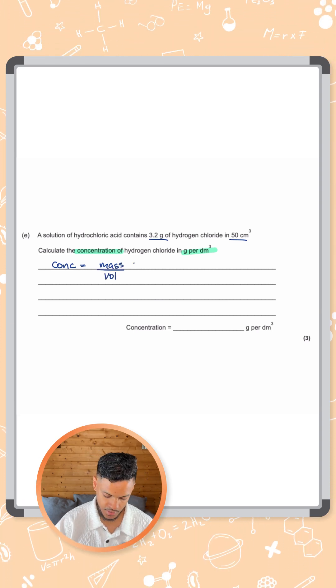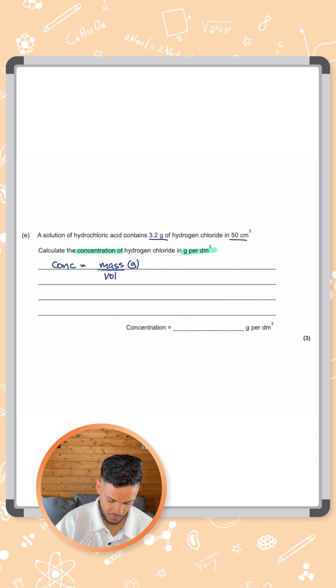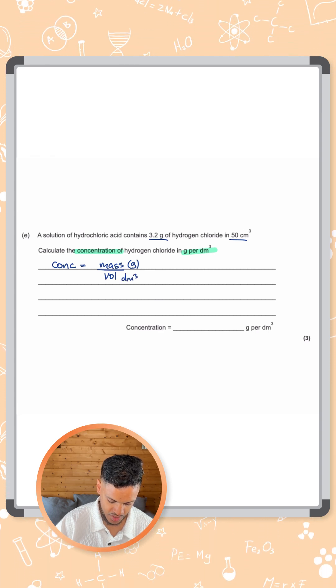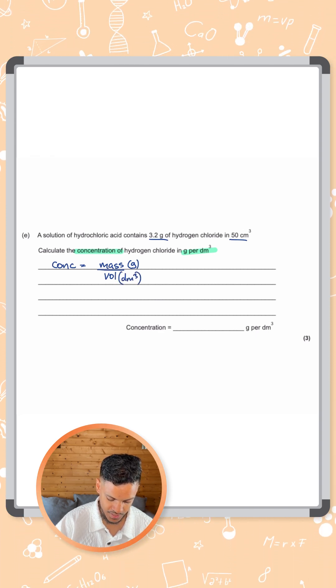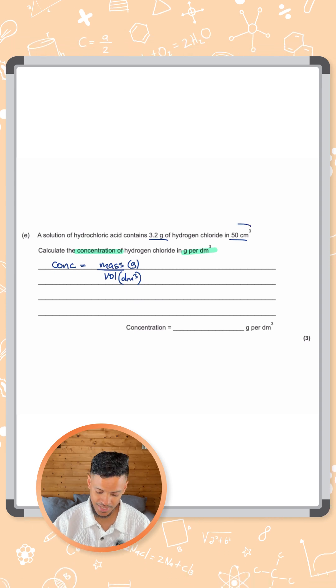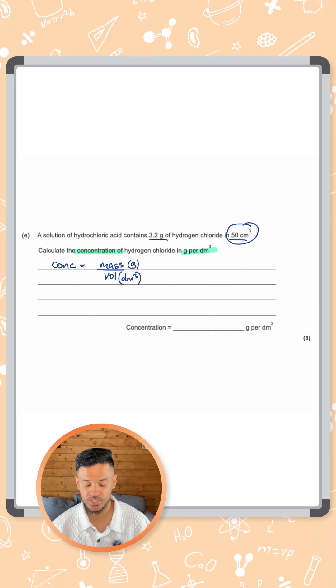What you need to remember here is mass is measured in grams, but volume needs to be measured in dm cubed, decimeters cubed, not centimeters cubed like it is in this question.